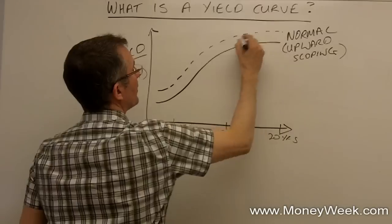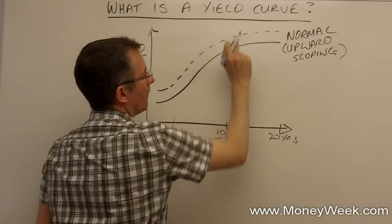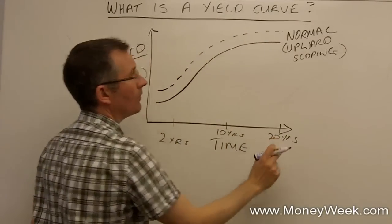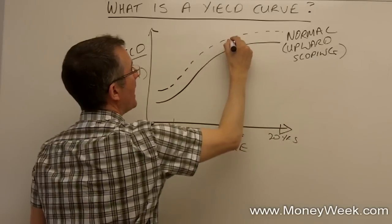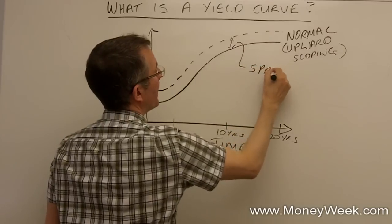And the gap, so in other words, the expected return is that little bit higher for both short, medium and long dated bonds. And the gap, just another bit of jargon, that gap there is known as a spread.